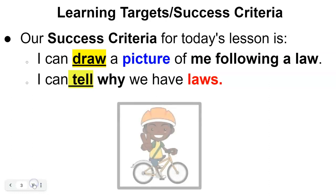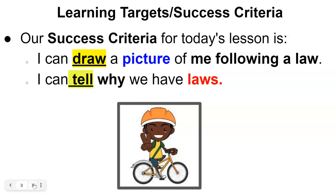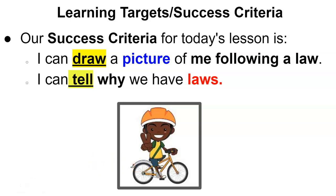So why do we have laws? I'm going to draw a picture of me following the law. Here I have a picture of a little boy wearing his helmet, and that is a law — you need to have a helmet when you are riding your bike. And why do we have that law? That law is to keep you safe in case of an accident.